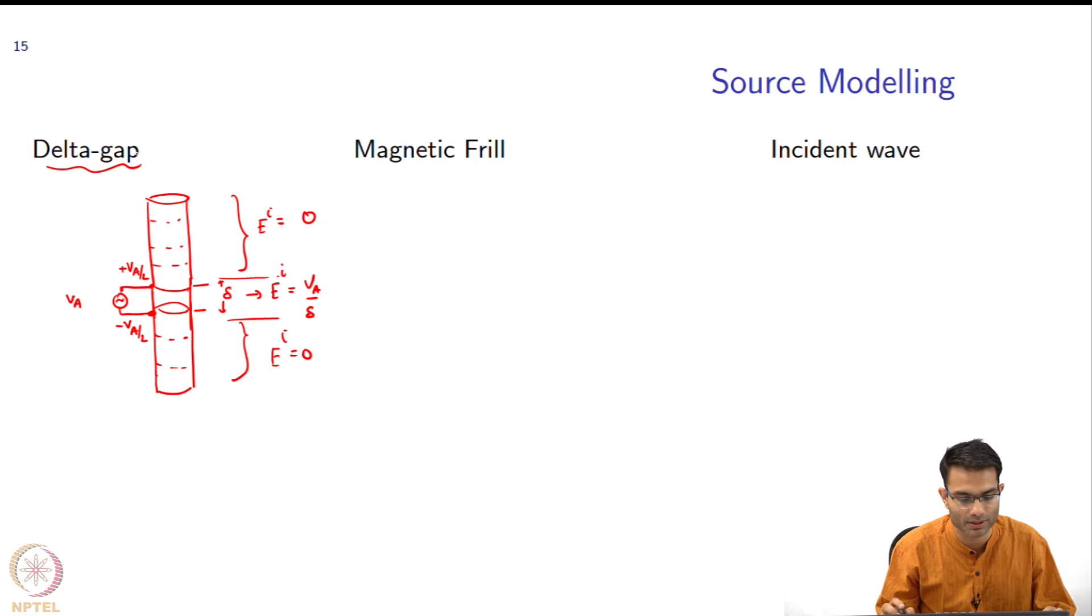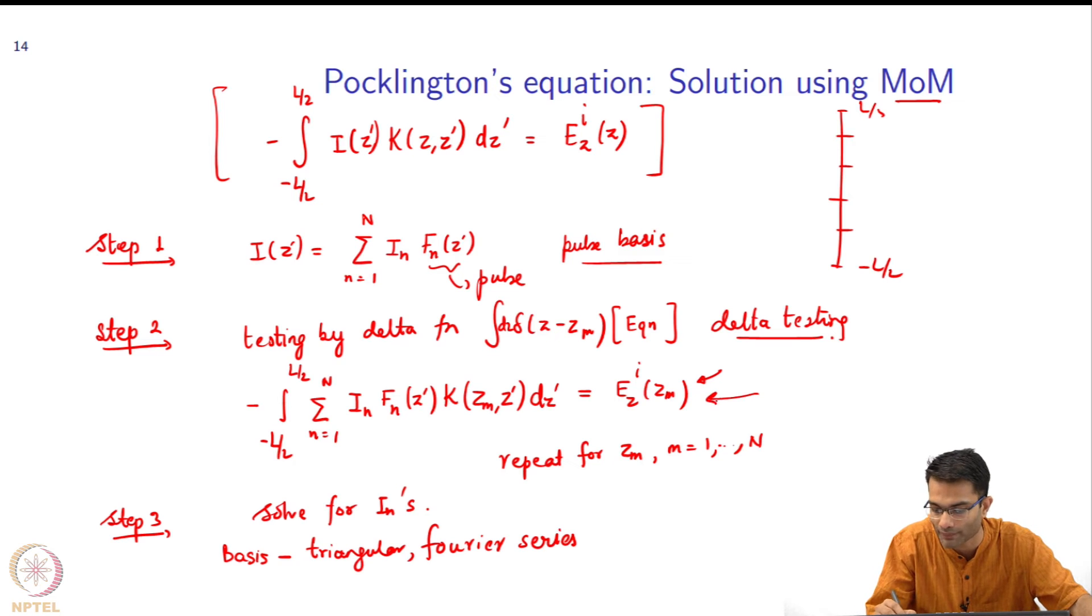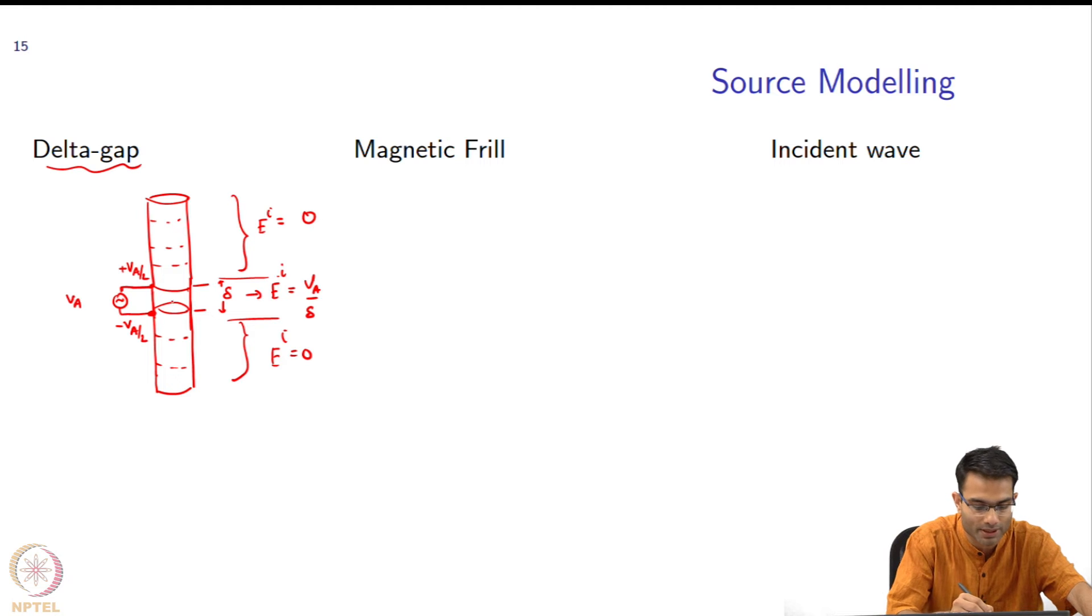This is your delta gap, which is the easiest one to apply because you can see the values: V_a by delta in the gap and zero everywhere else. This column vector that you have is at all different z_m's. That z_m which is the center of this segment, you put in this value; all other places you put zero. That's it, very simple to apply.